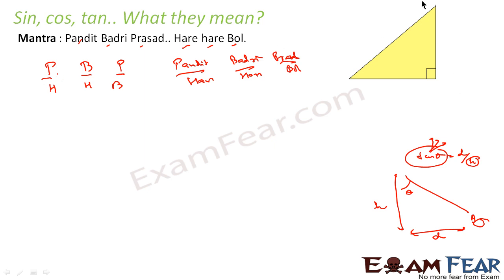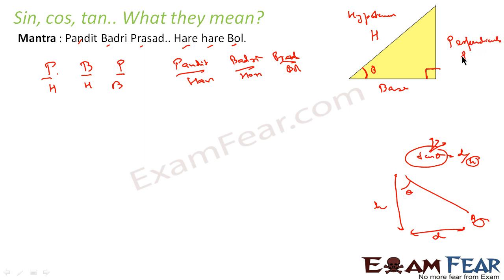In a right triangle, we have a 90-degree angle. The side opposite to the 90-degree angle is called the hypotenuse, H. We can take any angle theta. The side that is adjacent to theta — part of the theta angle — is the base. The side opposite to the angle theta is the perpendicular.